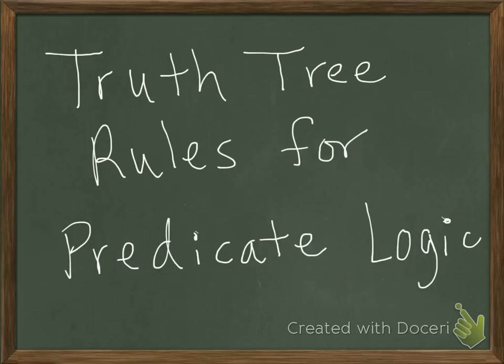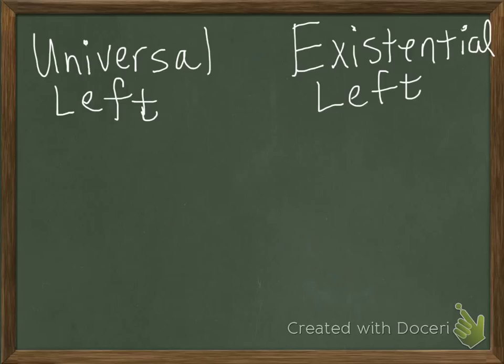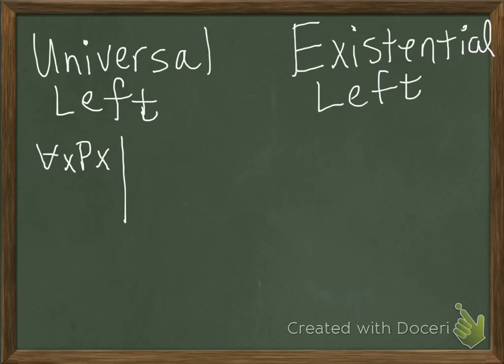None of the rules for predicate logic truth trees require branching, so that's another thing that makes them very simple. We will start with the rules for the left-hand side of the truth tree: universal left and existential left. So if we have the formula for all x, px, on the left side, we will instantiate that as pa.